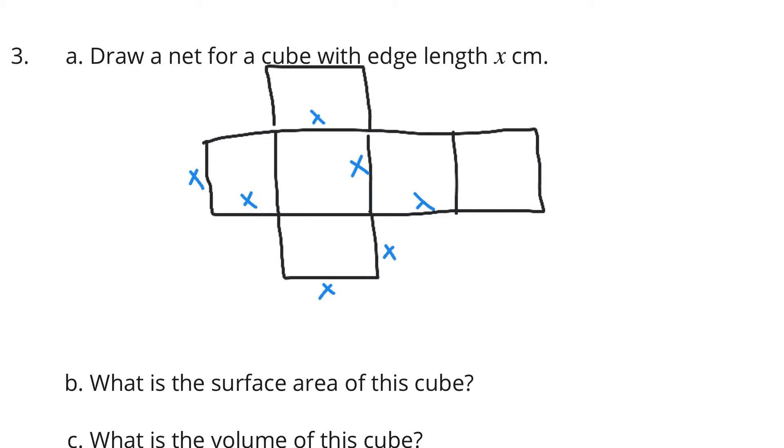All right, so what is the surface area of this cube? Well, again, there's 6 squares here. The area of one of these squares is x squared, and so there's going to be 2, 3, 4, 5, 6 of these squares that have an area of x squared. So this is going to be, for the surface area, 6 times x squared square centimeters.